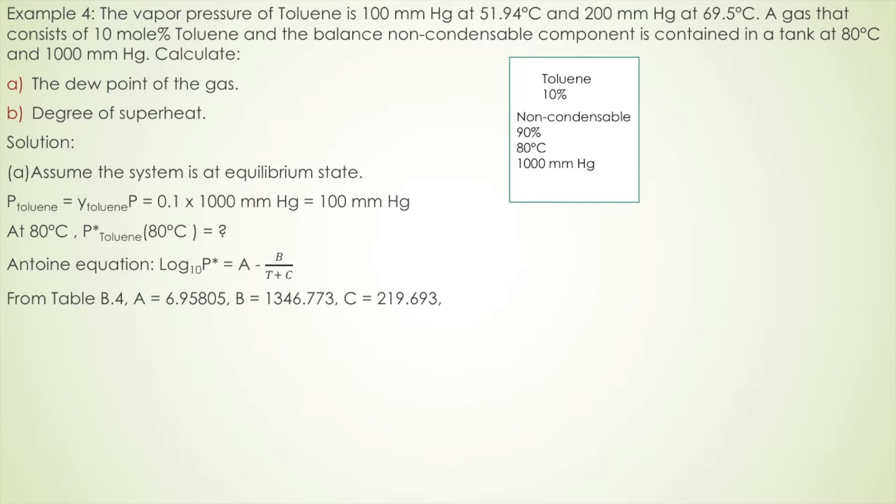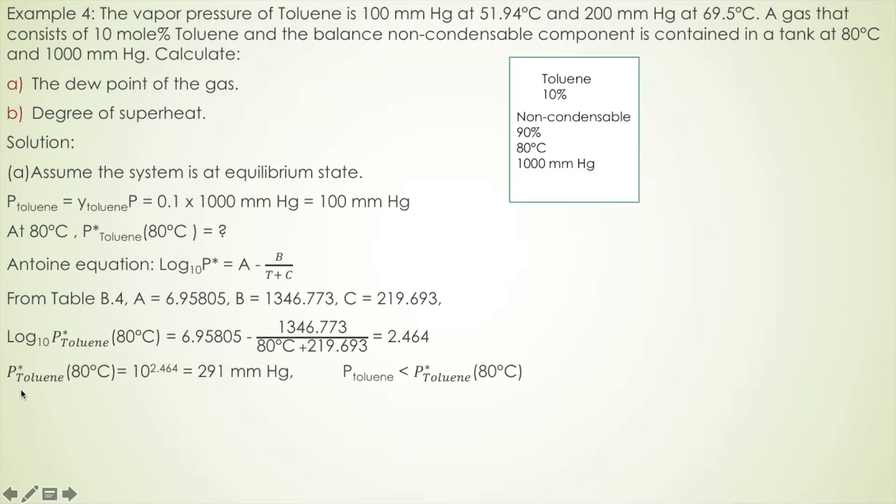Then substituting into this equation, we get log base 10 of vapor pressure at 80 degrees Celsius temperature is equal to A minus B over T plus C. Then we get 2.464. Vapor pressure of toluene at the system temperature is 10 to this power. Then we get 291 mmHg.